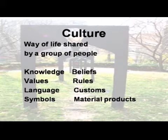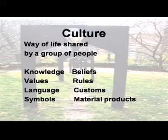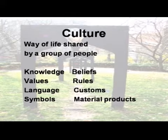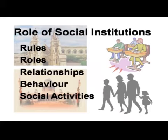Culture is the way of life shared by a group of people. It consists of knowledge, beliefs, values, rules, languages, customs, symbols, and material products within a society that fulfill human needs. Since culture prescribes the ways of life to human beings, the institutions function properly in society. Social institutions provide rules, roles, and relationships and control human behavior. Only through institutions do organized social activities take place.